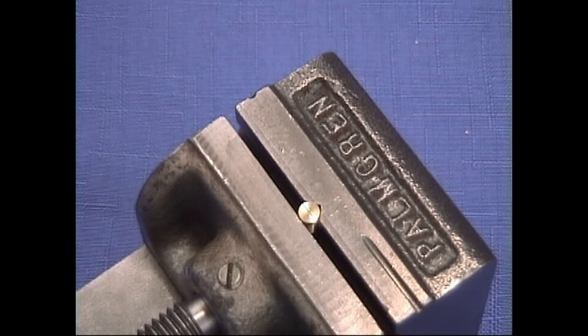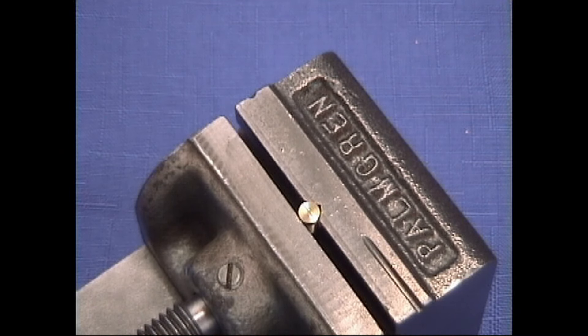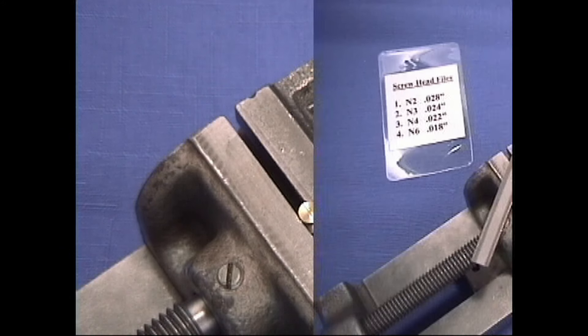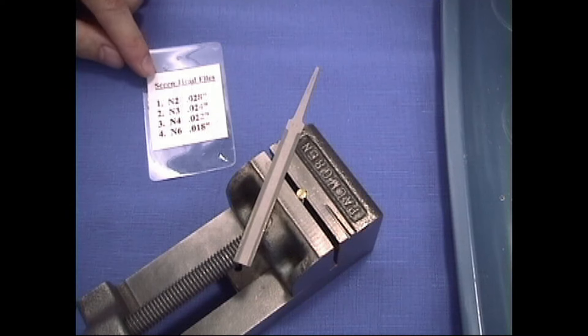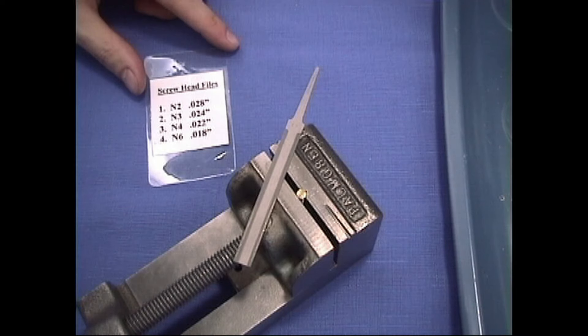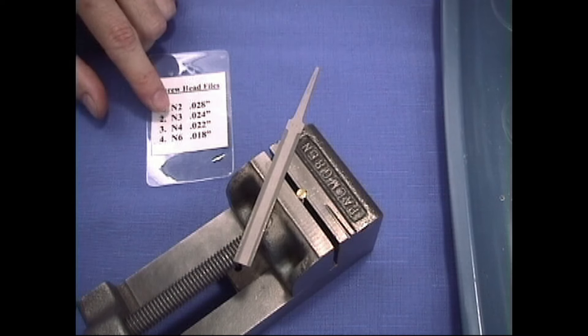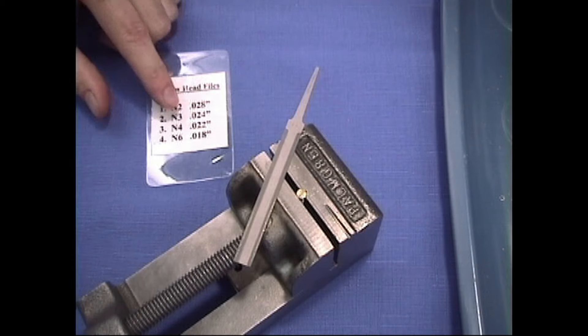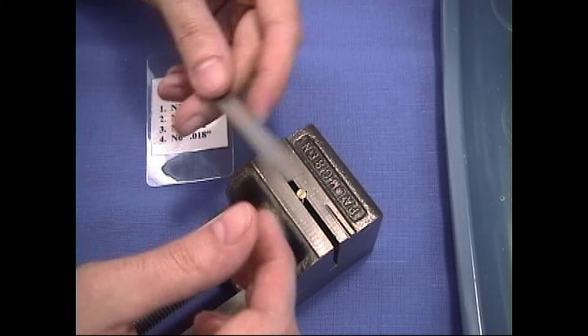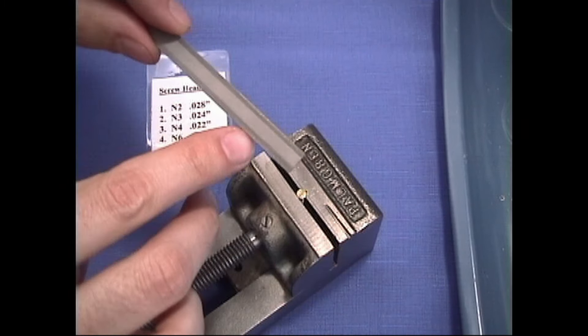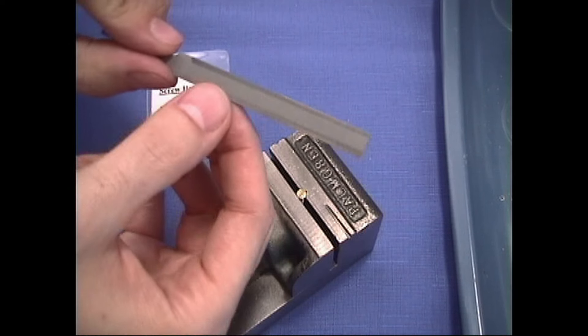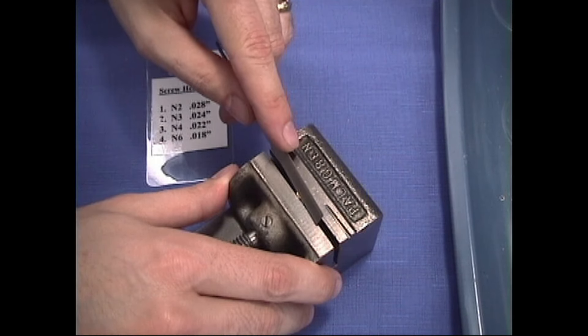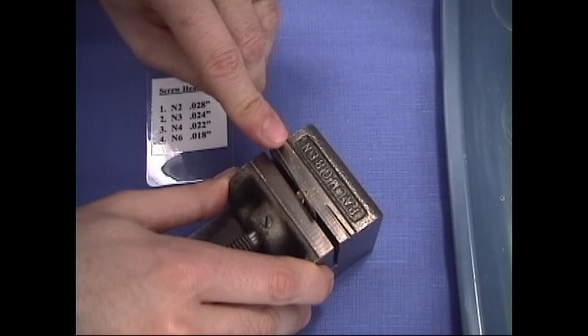Now the next thing we'll do is get one of our screw head files. And this is something new that I'm going to introduce to you right now. Here's a screw head file. And it looks like this. I've got a set of four of them. And I've got my little chart here that I've made for myself. And this is a number N3 which is 24 thousandths of an inch. And it's got its filing edges. It doesn't cut in the center, just on the outside edges.